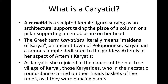Now for the Karyatid — the form of a female sculpted column. By definition, a Karyatid is a sculpted female figure serving as an architectural support, taking the place of a column or pillar supporting an entablature on her head. The Greek term Karyatid literally means 'maidens of Karyai,' an ancient town in the Peloponnese. Karyai had a famous temple dedicated to the goddess Artemis. The Karyatids carried on their heads baskets of live reeds as if they were dancing plants in ecstatic round dances.